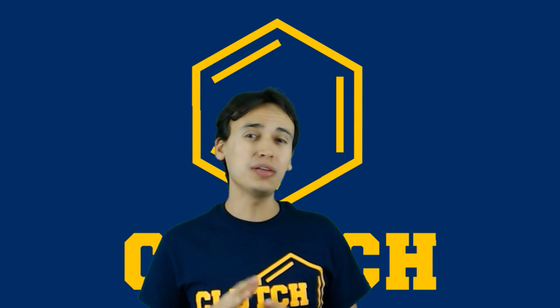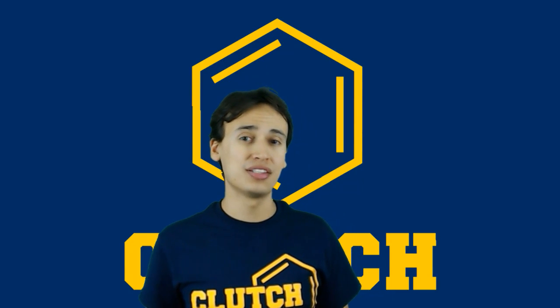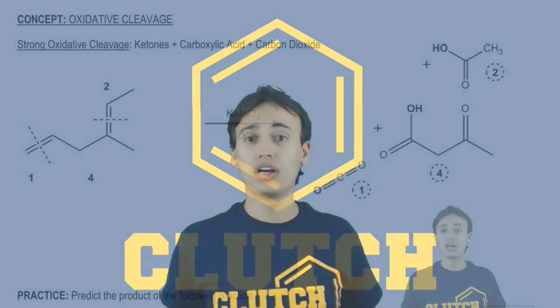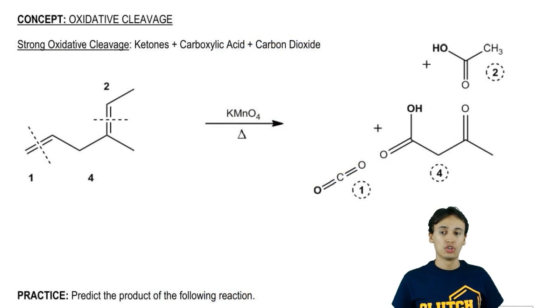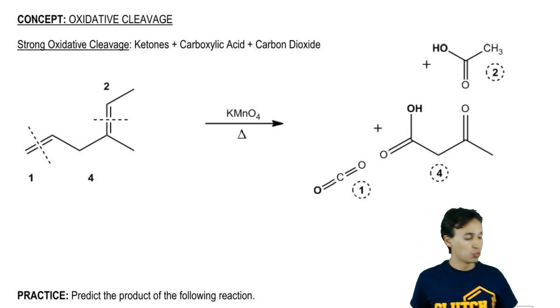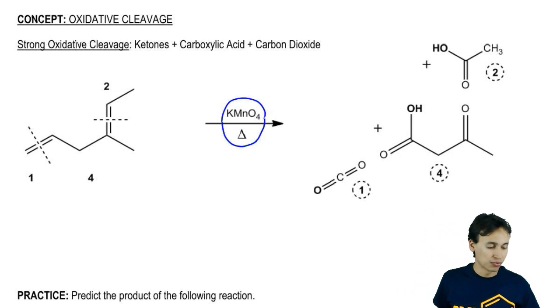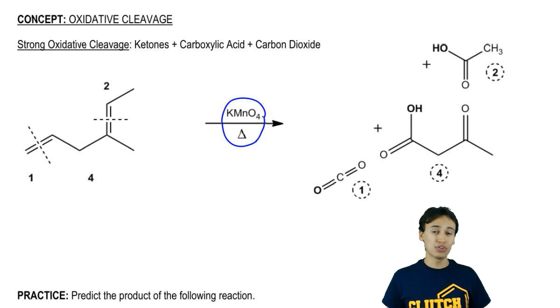In this video, we're going to discuss a really important reaction that happens to double bonds called strong oxidative cleavage. Strong oxidative cleavage is the reaction of double bonds with hot KMnO4. That's really important to know because KMnO4 can do several things depending on the temperature.